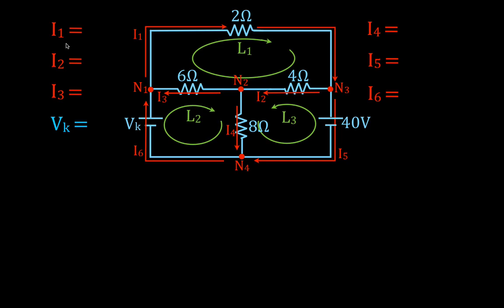We're going to find all of the currents and this voltage source. We already know the 40-volt source, so we don't need to find that one. In this problem, we're going to be given I4, and I4 is 3 amps — that is the current that flows through this branch right here, through this 8-ohm resistor. The first thing we're going to do is apply the current rule at each of the four nodes in this circuit.